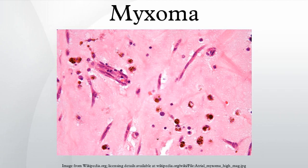A myxoma is a myxoid tumor of primitive connective tissue. It is the most common primary tumor of the heart in adults, but can also occur in other locations.